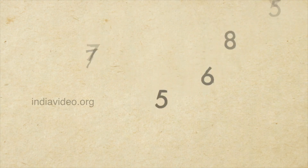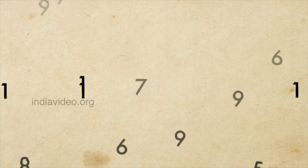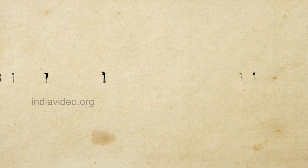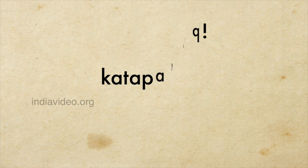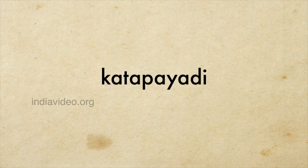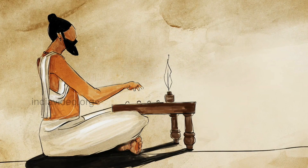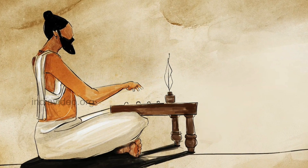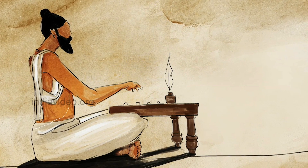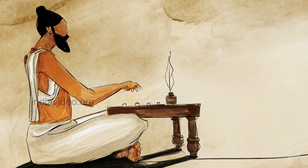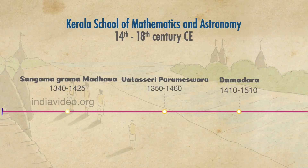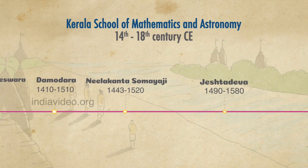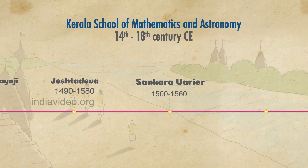The Kattapayadi is one of the ancient Indian systems of representing numbers with Sanskrit alphabets. It offers a convenient way to remember very large numbers by encoding them into sentences of prose or poetry. Some historians attribute the origin of this system to Vararuchi, a brilliant scholar from Kerala who lived during the 4th century CE. There are several examples of the Kattapayadi being extensively used in the mathematics and astronomy works of scholars from Kerala of the 14th to the 18th century.